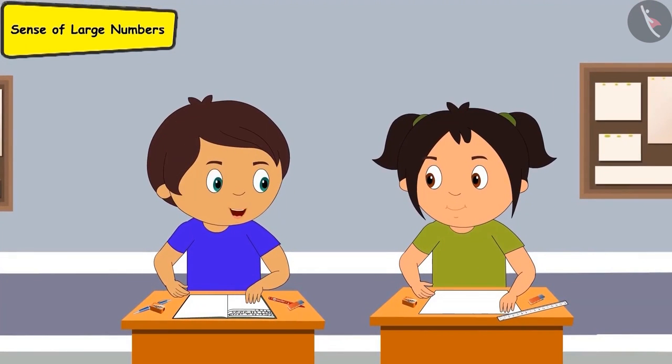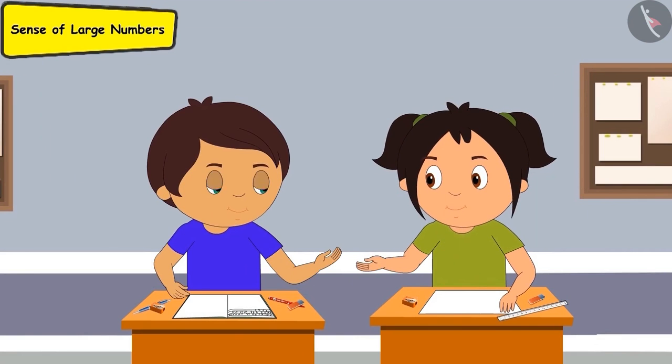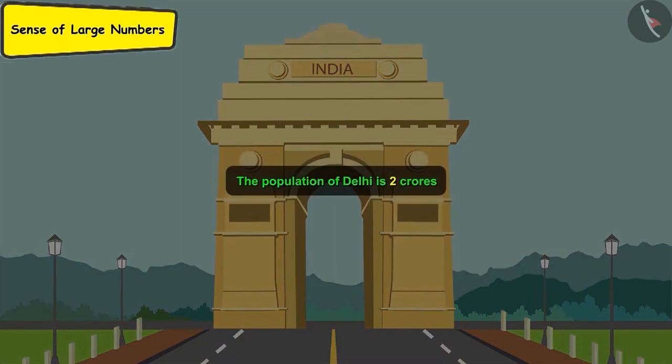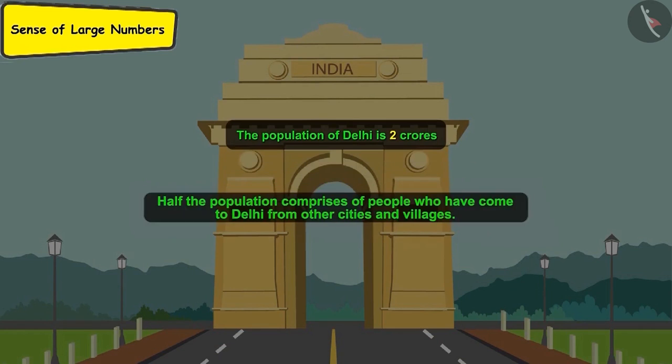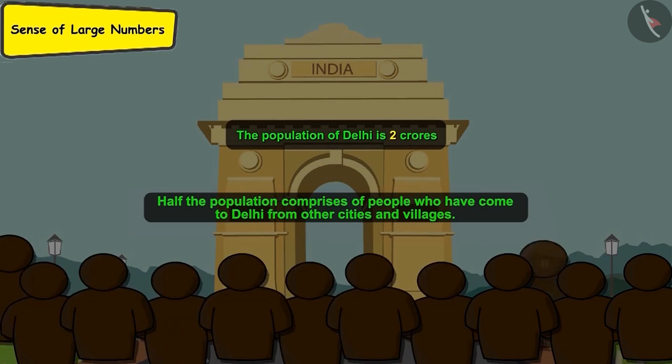Didi, didi, see what has come in today's newspaper. What is it, Sonu? It says that India's capital Delhi has now reached a population of 2 crores. In addition to it, it's written, half of Delhi's population comprises of people who have come down to the city and settled here in search of better jobs. This is the biggest reason behind Delhi being so populated.